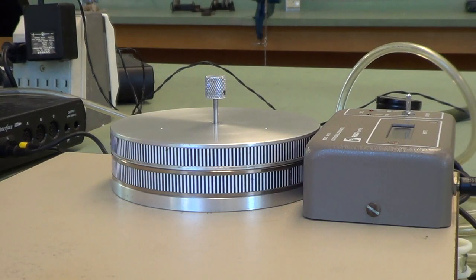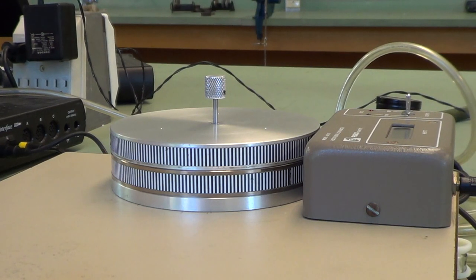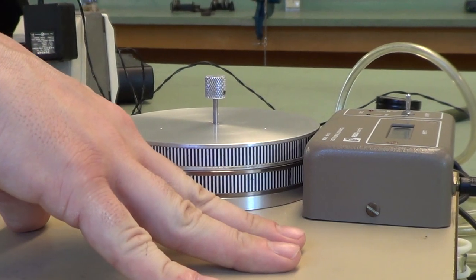For the rotational collisions lab, this is a very simple equipment list. Essentially, all you have is your rotation dynamics apparatus,